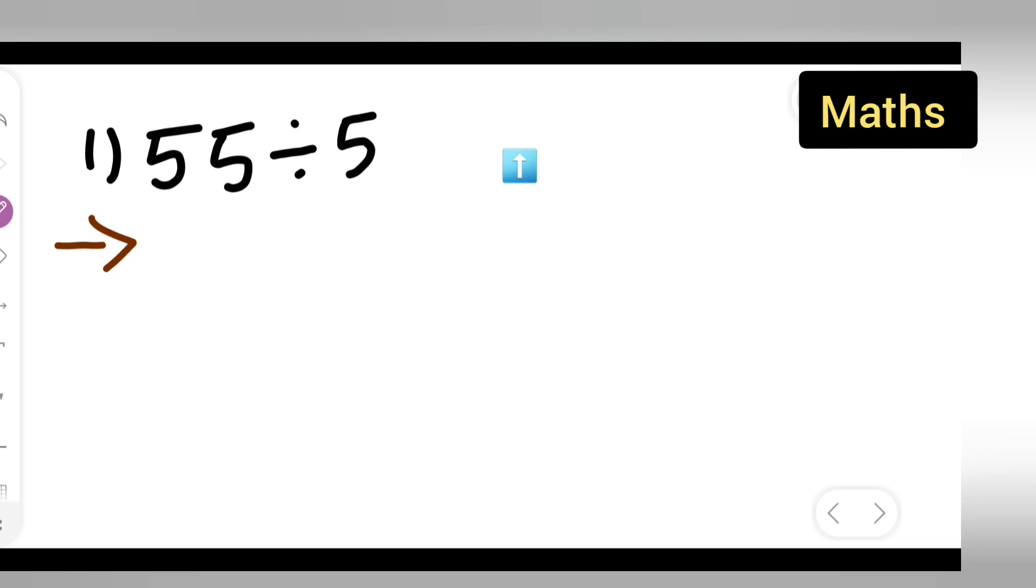First, write down the question. I'm going to give it a stepwise order. 55 divided by 5 is equal to 55, and you'll have to divide it by 5.